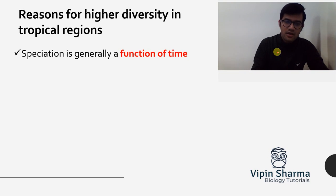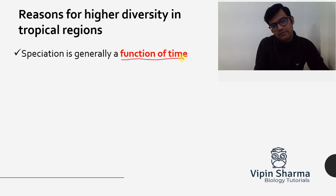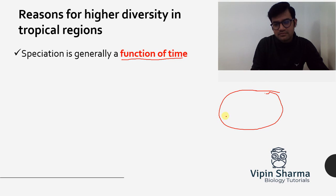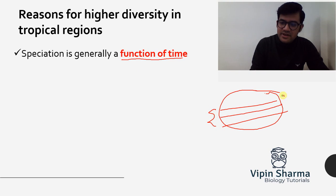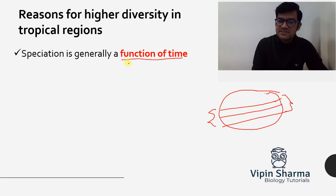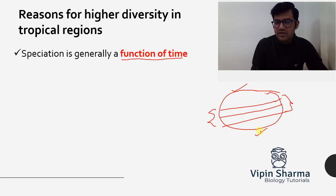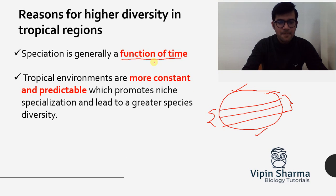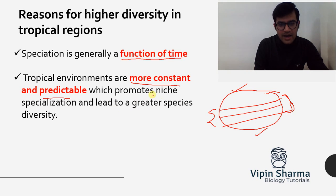The question arises: why does this happen? Species formation is basically a function of time. The equatorial tropical regions remained relatively undisturbed throughout the evolution of earth. If it's relatively undisturbed, more time is available for species to evolve and form different kinds of species. On the contrary, polar regions have undergone much more disturbances throughout evolutionary time, so they offered less time for species formation.